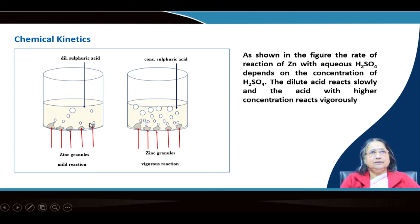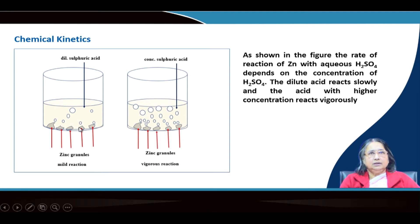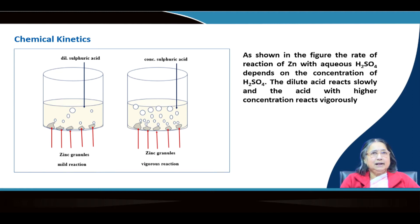You will see that in the first vessel where dilute sulphuric acid was added, the reaction involves evolution of hydrogen gas forming bubbles. The bubbles are coming out in a very slow process, but in the second vessel it is coming very vigorously — meaning the reaction is going on slowly in the first and vigorously in the second. This is the topic of chemical kinetics: why some reactions are slow and why some are fast.